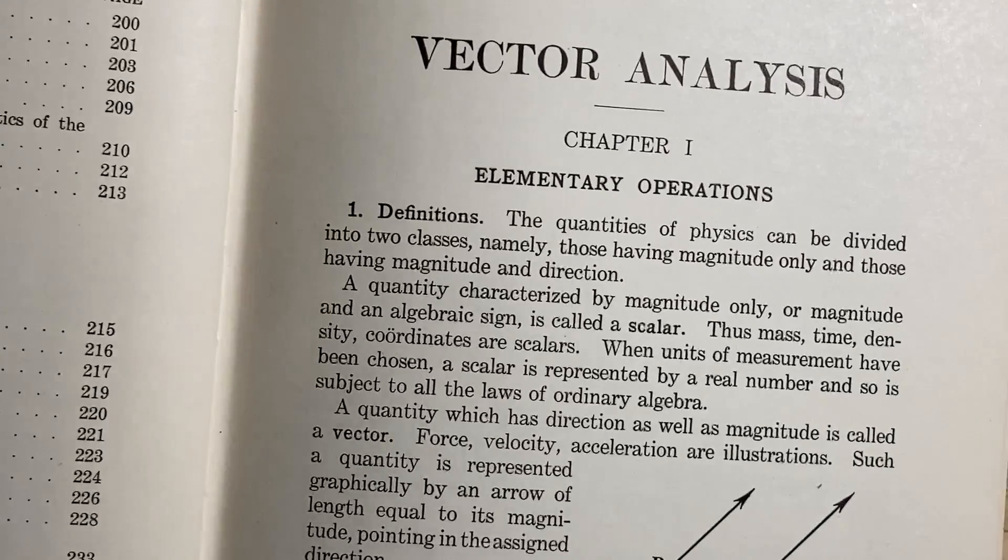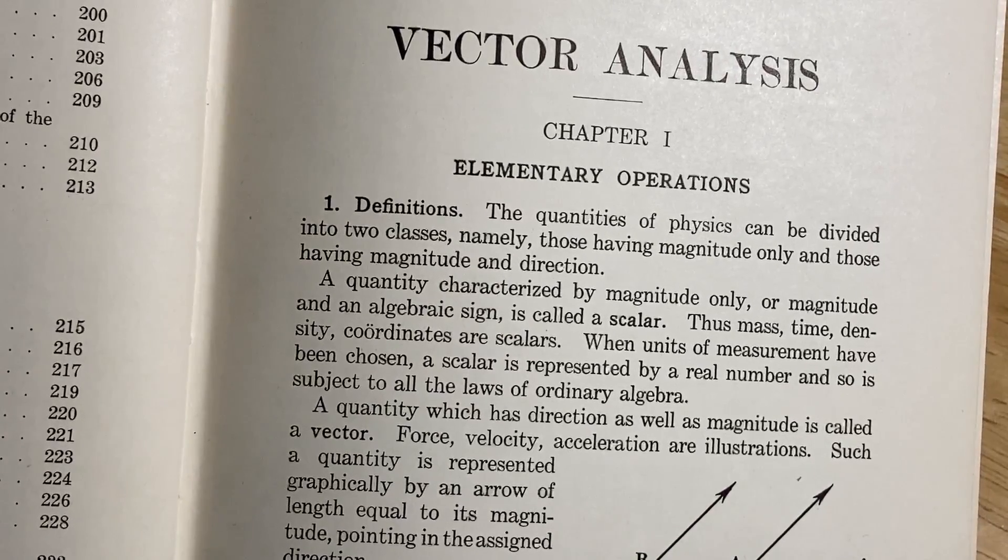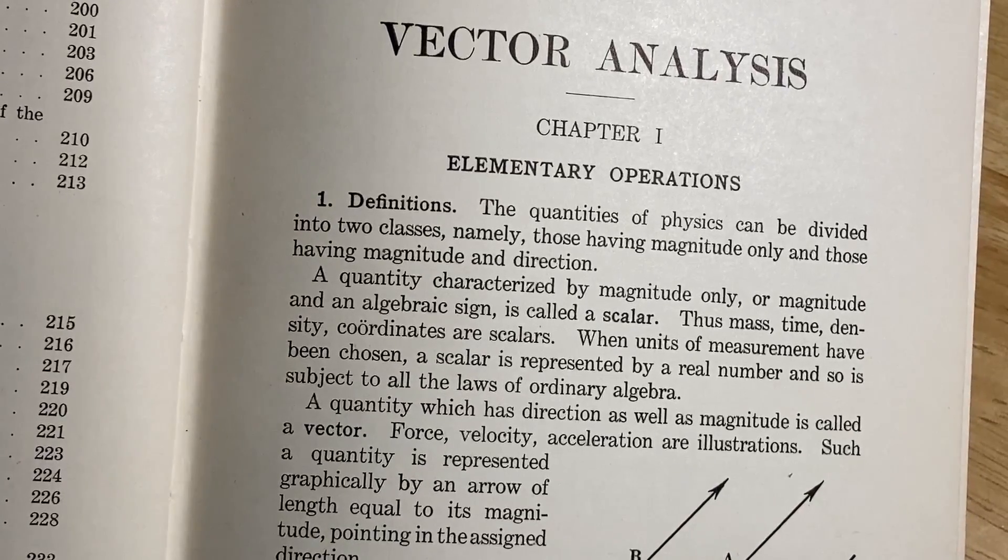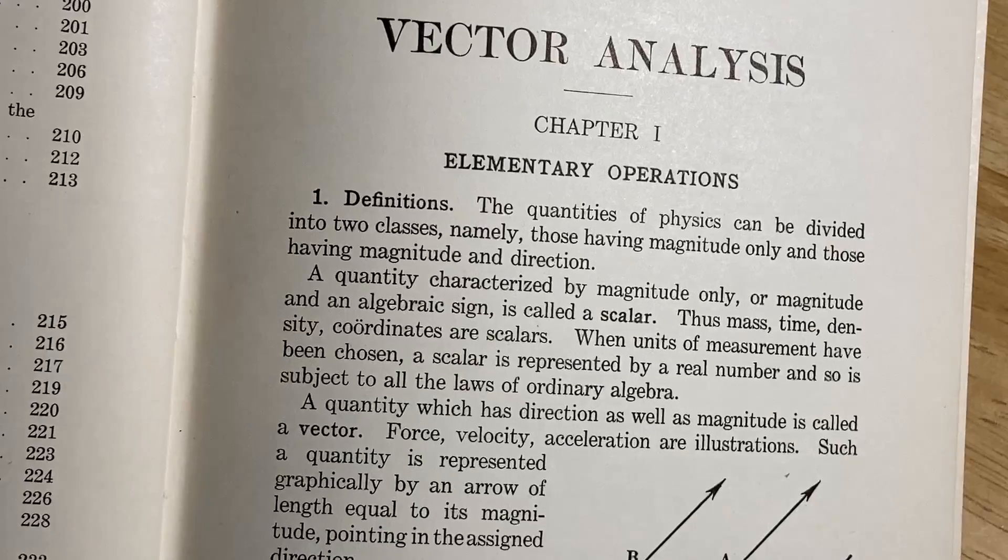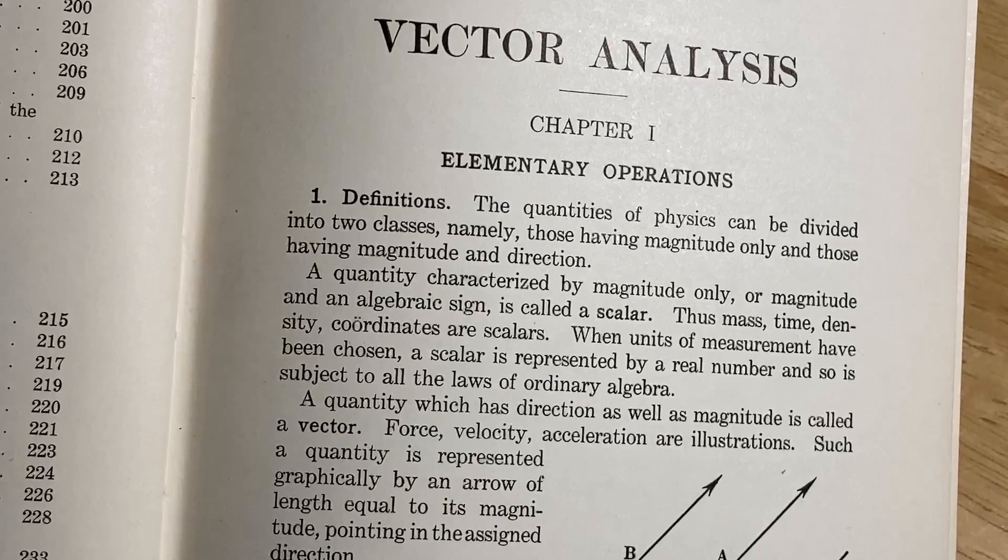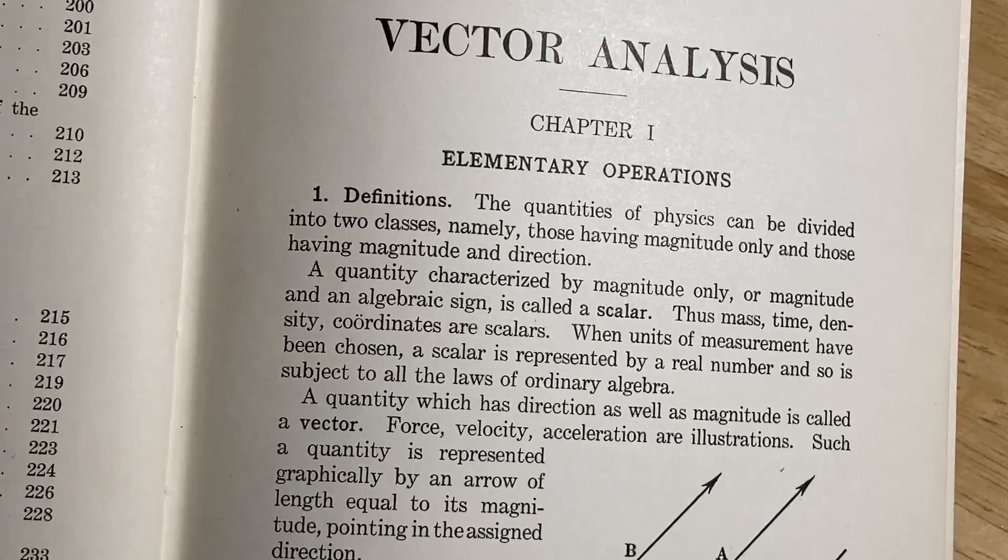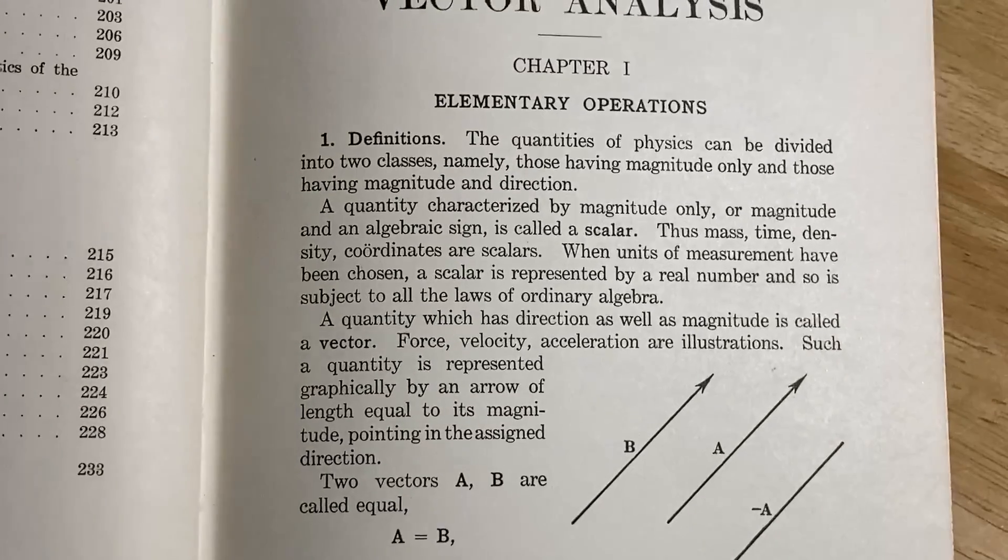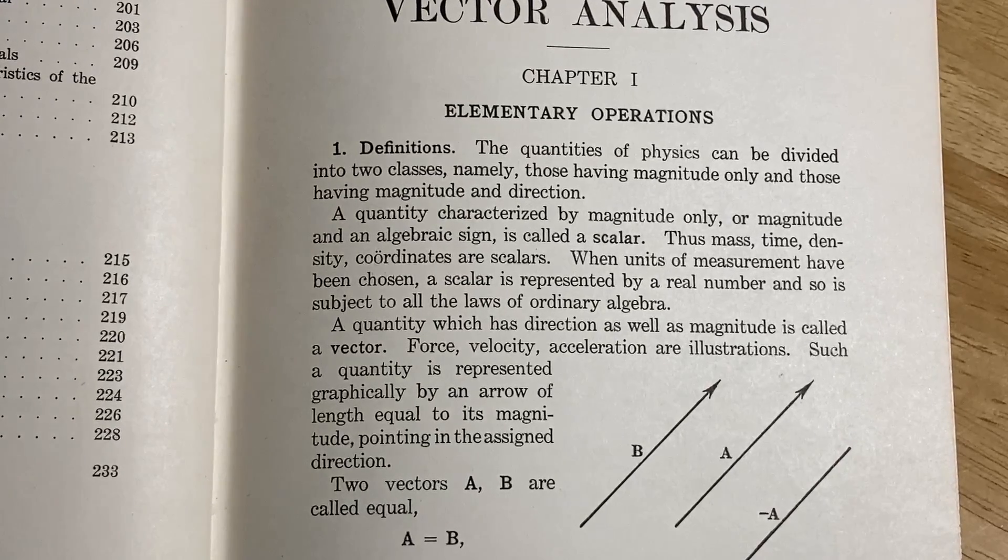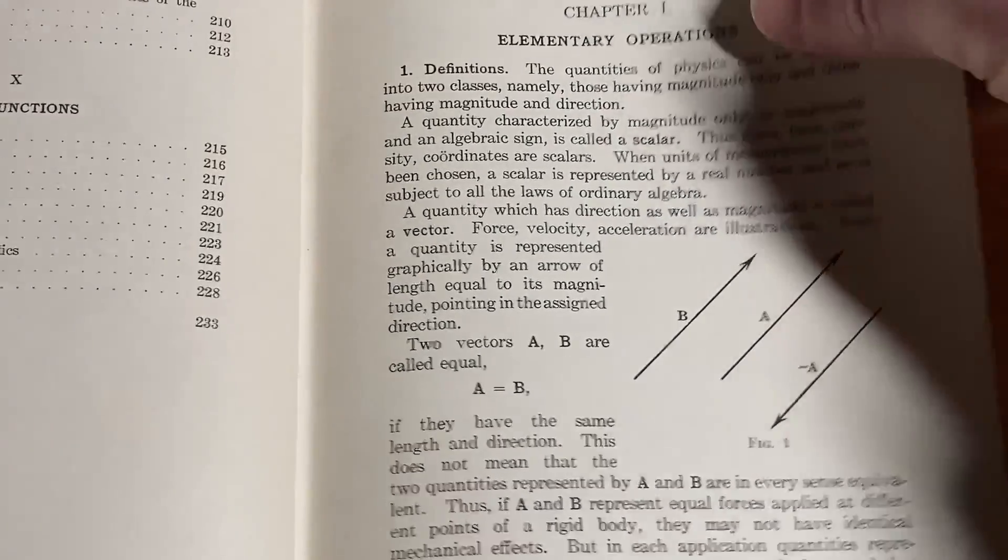Elementary operations. The quantities of physics can be divided into two classes, namely those having magnitude only and those having magnitude and direction. A quantity characterized by magnitude only or magnitude and an algebraic sign is called a scalar. Thus, mass, time, density, coordinates are scalars. When units of measurement have been chosen, a scalar is represented by a real number and so is subject to all the laws of ordinary algebra. A quantity which has direction as well as magnitude is called a vector. So force, velocity, and acceleration are illustrations. And here they have some vectors to represent those. So pretty cool.